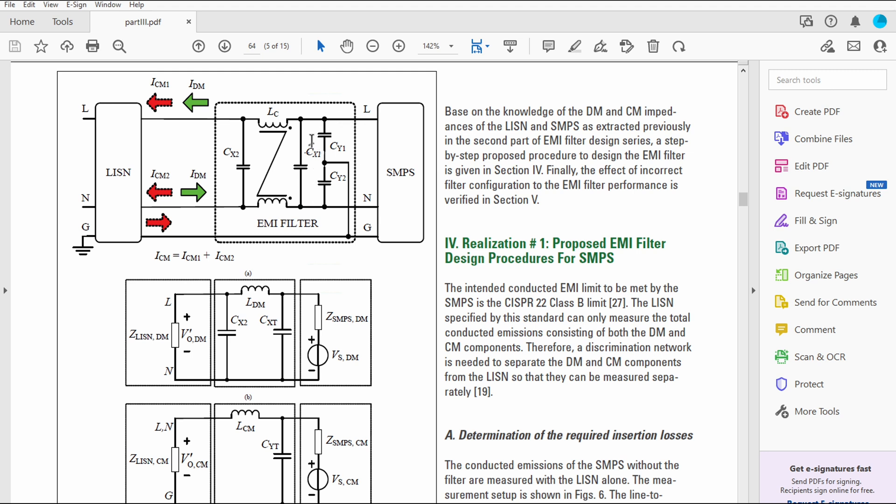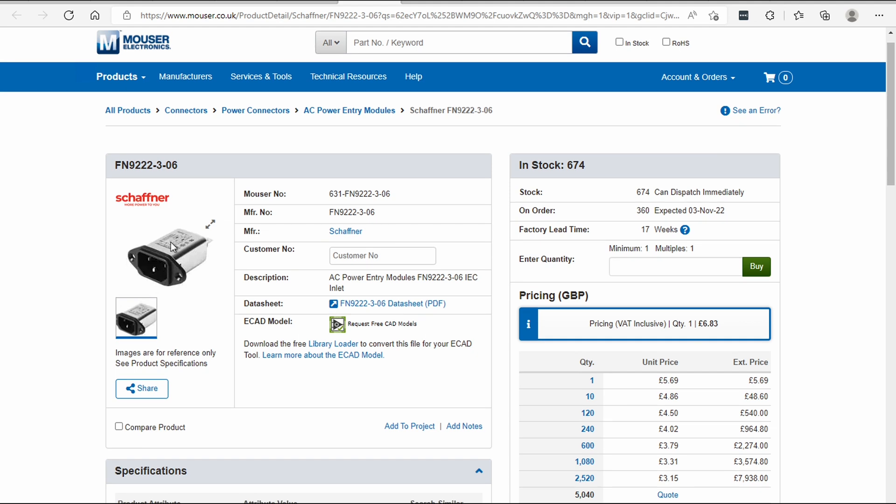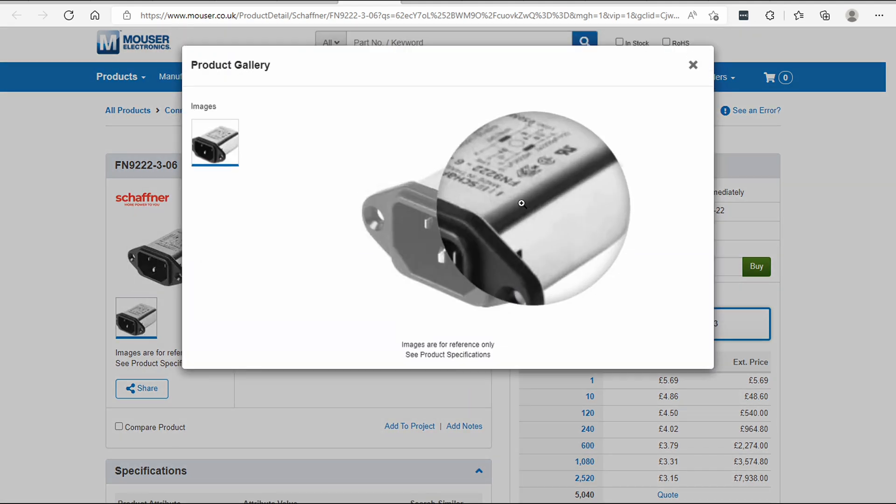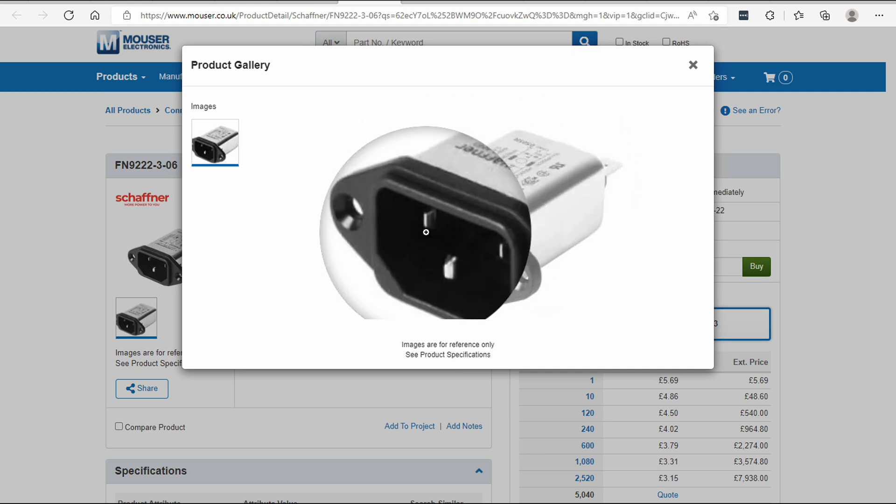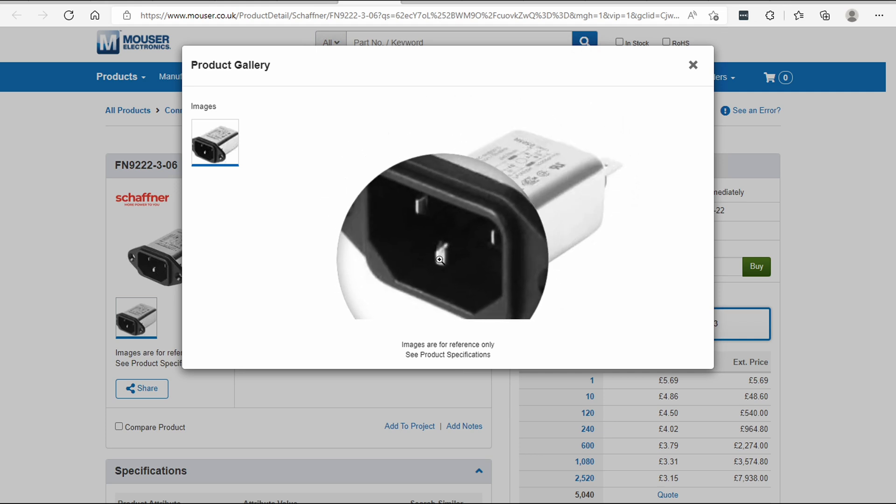Whereas for a common mode noise, this isn't going to be quite as effective and what we need is Y capacitors and an inductor in series. All together this circuit is called EMI filter. Typically I recommend to use where possible a part like this where an EMI filter is integrated into the mains connector.